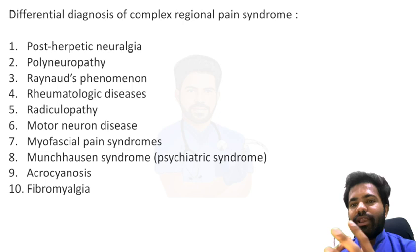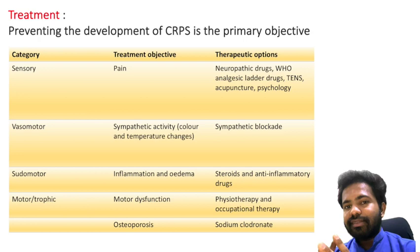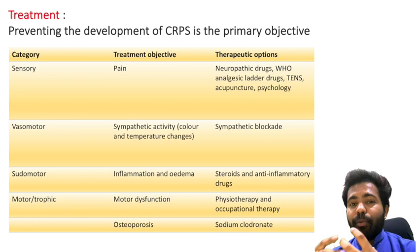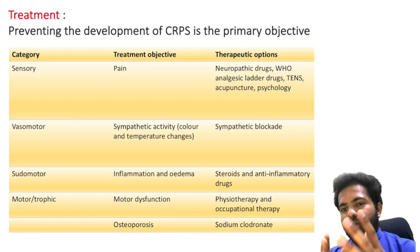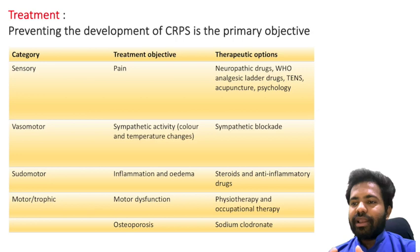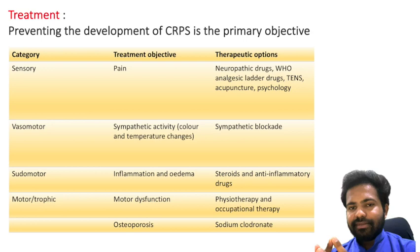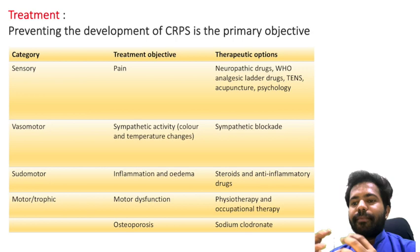Preventing CRPS is the major objective, rather than treating it, because there is no permanent cure. Psychological support and physiotherapy rehabilitation play a very important role in treatment. For sensory symptoms and pain, we give neuropathic drugs like gabapentin, analgesics from the WHO analgesic ladder, TENS, acupuncture, and psychological therapy.